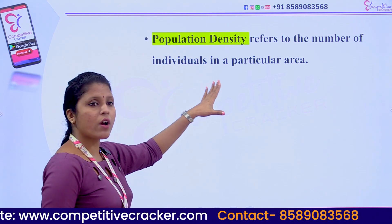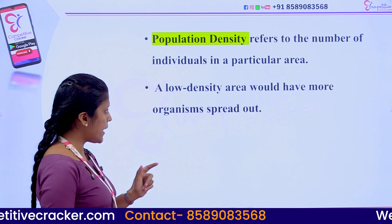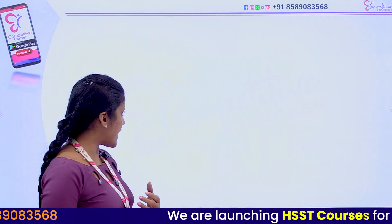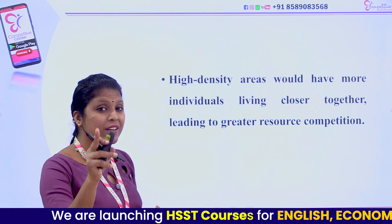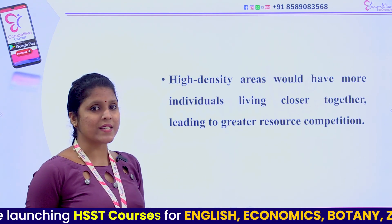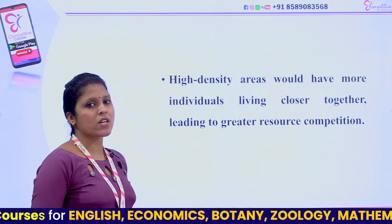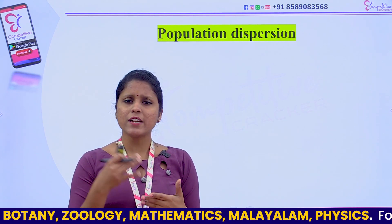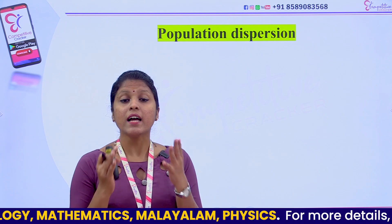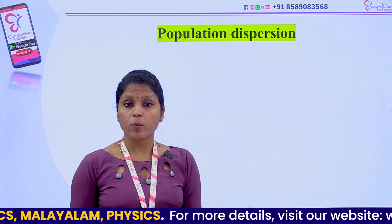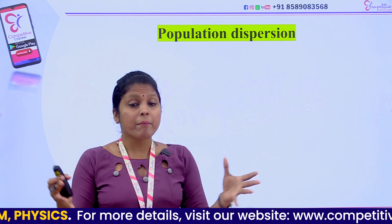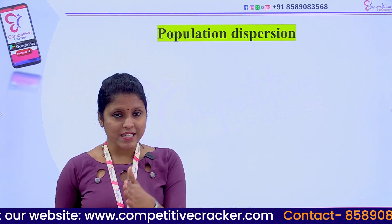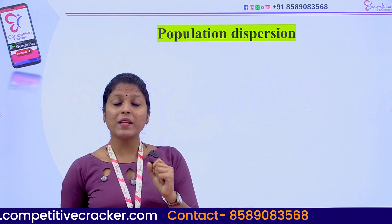Population density refers to the total number of individuals in a particular area. Low-density areas are spread out, while high-density areas lead to greater use of shared resources, resource competition, and ultimately population crash. Population dispersion is the spatial distribution of individuals, and it is a main item in population ecology.